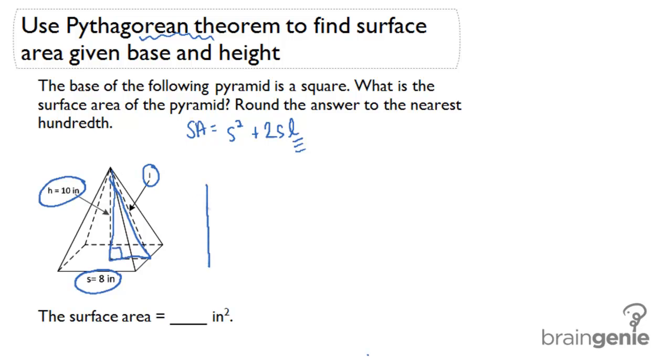So if we redraw that triangle outside the pyramid, the height is 10 inches, the slant height I'm going to call L, and the half of the side length is 4. So we could set up 10 squared plus 4 squared equals L squared.